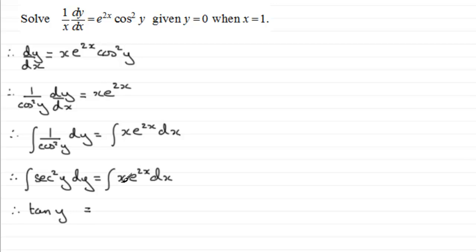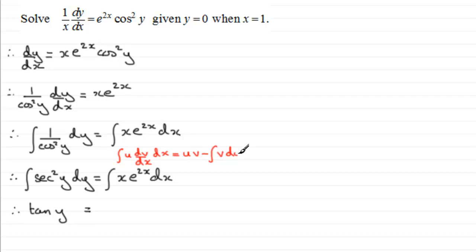Now I mentioned we do the right side by integration by parts, so I'm assuming you're familiar with that — if not you can check it out on my website. As a brief reminder, when we've got a product of two functions of x, let's call them u and dv by dx and we're integrating with respect to x, then this equals u times v minus the integral of v times du by dx with respect to x.